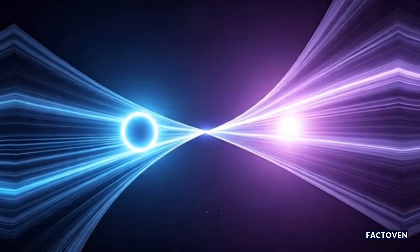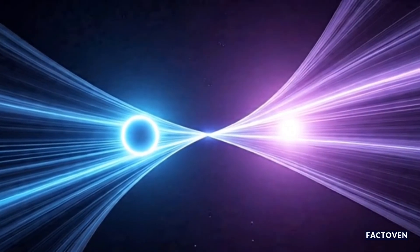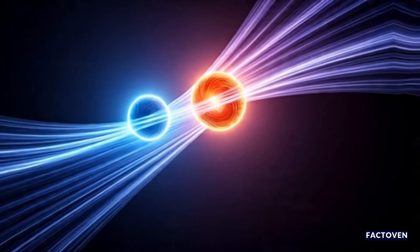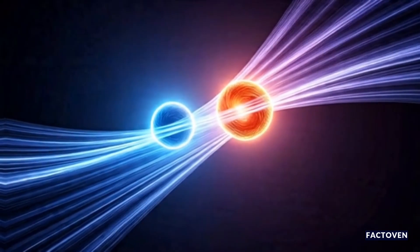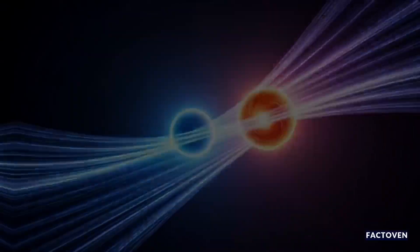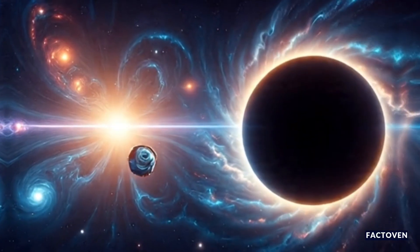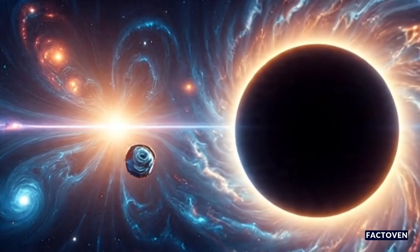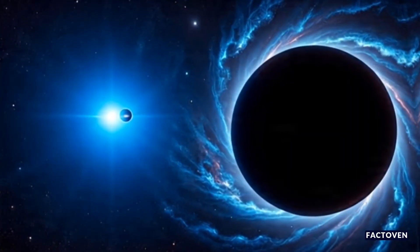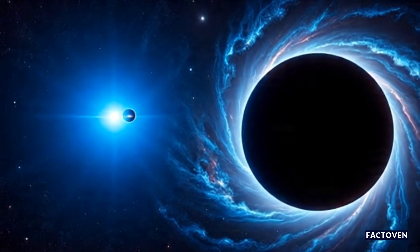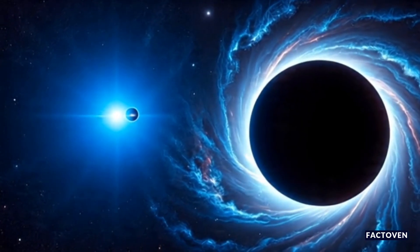Since 2015, the LIGO and Virgo observatories have been listening to the universe, detecting the faint echoes of black holes colliding. Each ripple tells a story: the masses of the objects, how fast they moved, and even what kind of cosmic environment they lived in. Over 300 such mergers have been recorded so far.